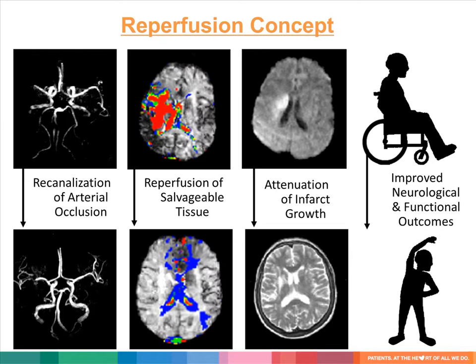We now move on to the second part of the presentation on reperfusion. The concept of reperfusion is demonstrated here: one aims to recanalize an arterial obstruction to reperfuse potentially salvageable tissue, in order to attenuate infarct growth with the ultimate aim of improving functional outcome.